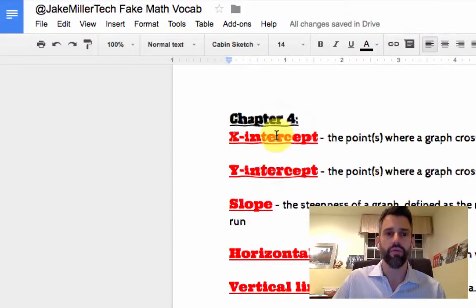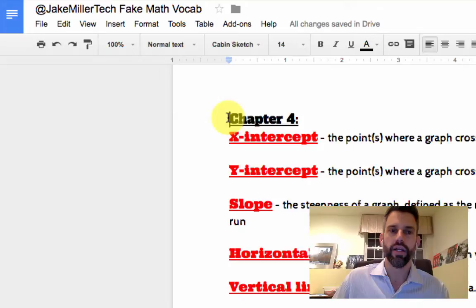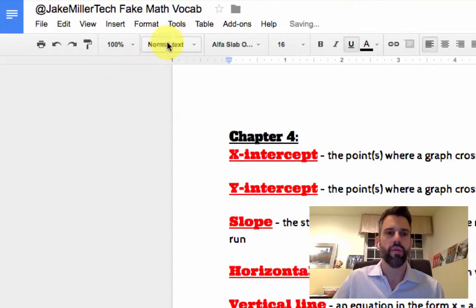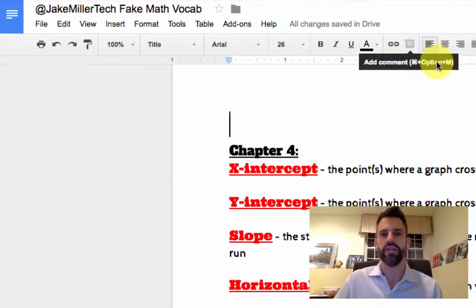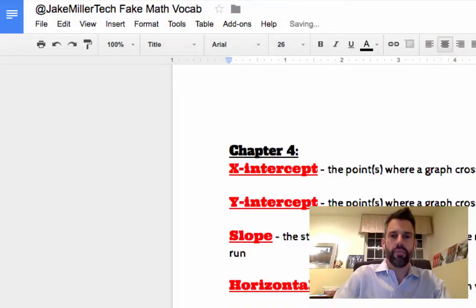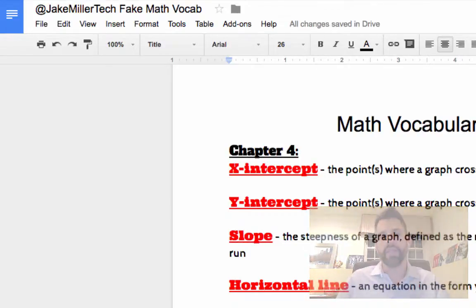Regardless whether it's red, bold, and underlined or this regular text out here, it's still in here as normal text. Now let's say I need a title on my vocabulary up here, so I'm going to make it title text. By clicking on it, it automatically makes it this big size 26 font. Maybe I want to center it and I'm going to put in math vocabulary. Now it automatically takes on that special title formatting.